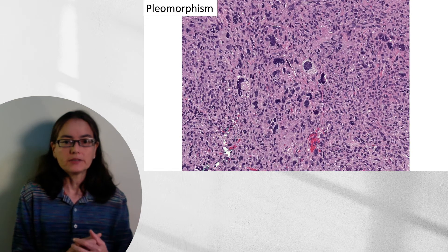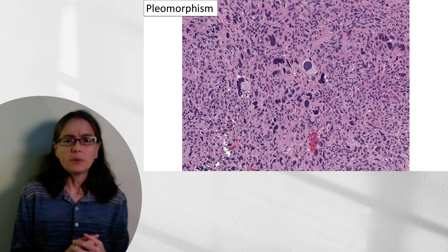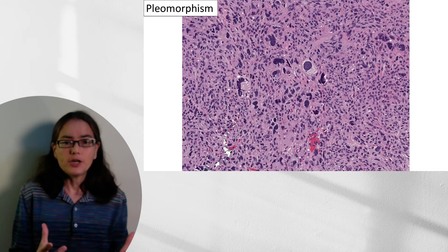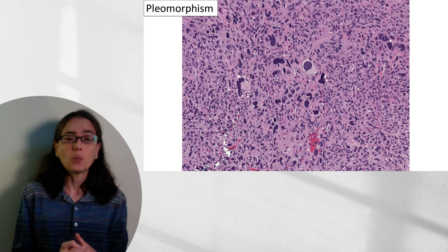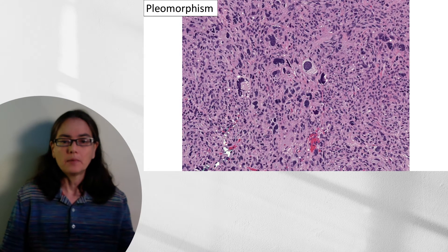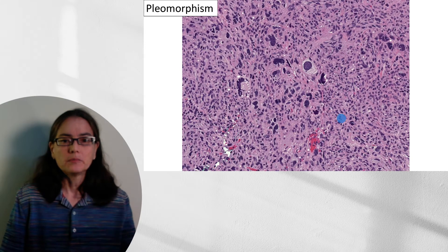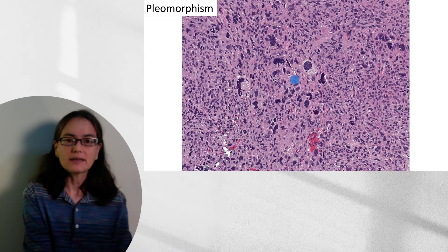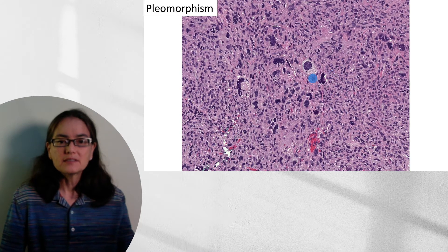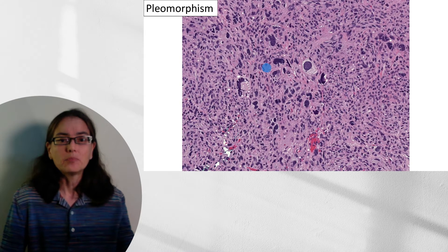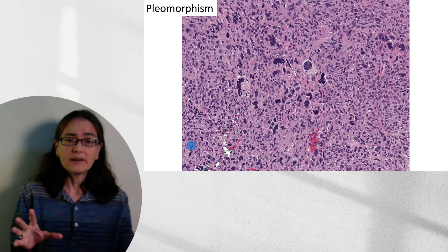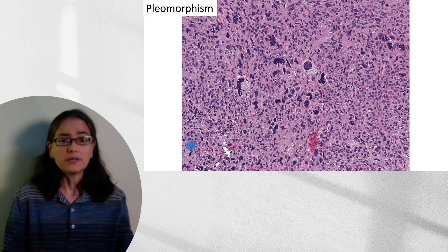Now let's look at what happens when cells have really lost their way — this is what we call pleomorphism. Pleo means many, morphism means shapes, so we have many shapes. This is a beautiful example from a sarcoma. Sarcomas are well-known for showing a lot of pleomorphism when they become high-grade. If I took a tiny biopsy from here and another from another part of the same tumor, I really couldn't say they're the same tumor due to the variability. Here we have a big, dark, convoluted nucleus. If you see something like this on an exam, this is malignant.